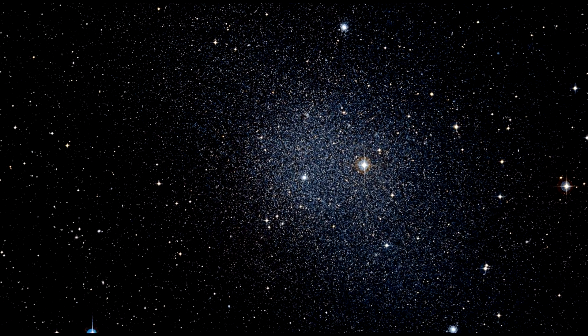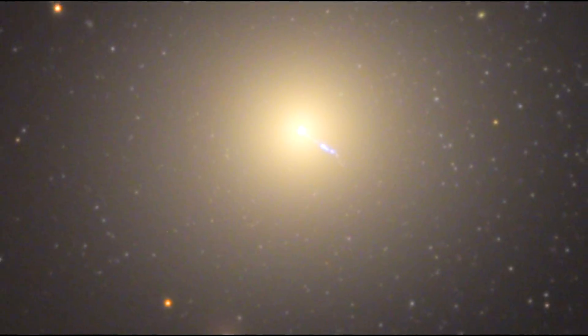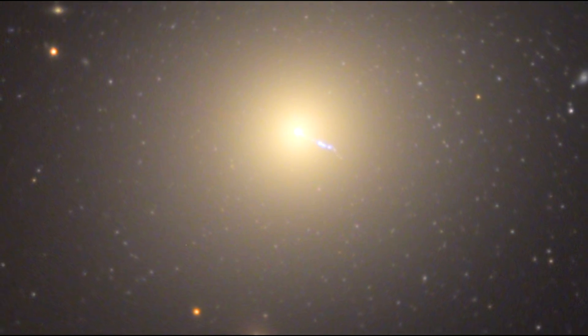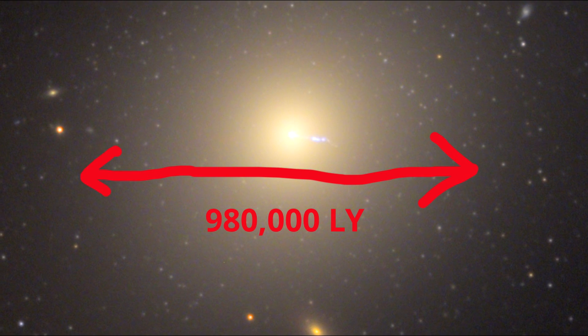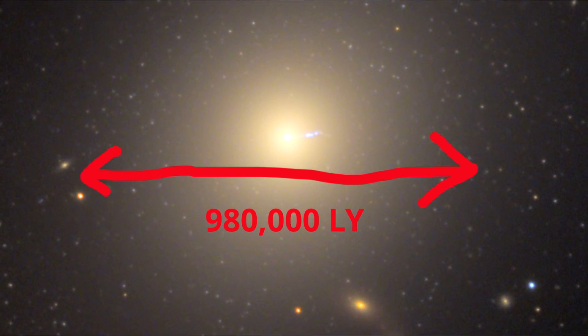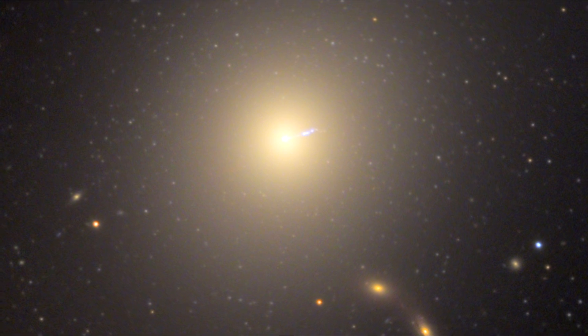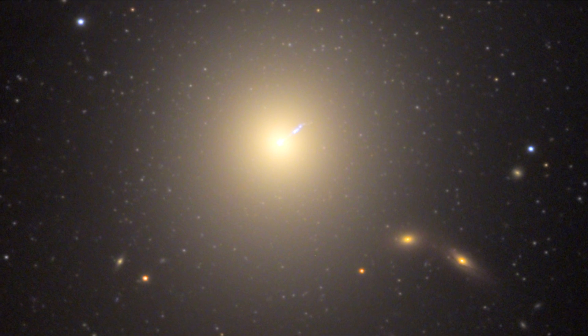But some galaxies can get extremely huge. The biggest galaxy that we know about is called M87. And that is 980,000 light years across, almost a million light years across. So in other words, a beam of light would take a million years to go from one end of that galaxy to the other. Pretty unfathomable.